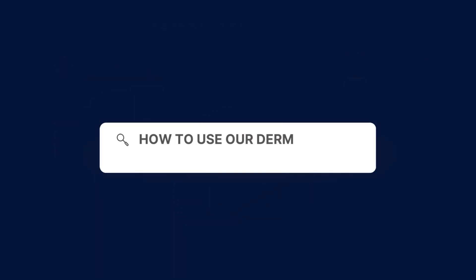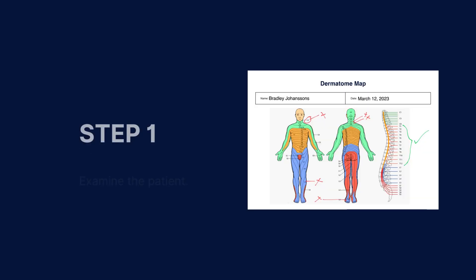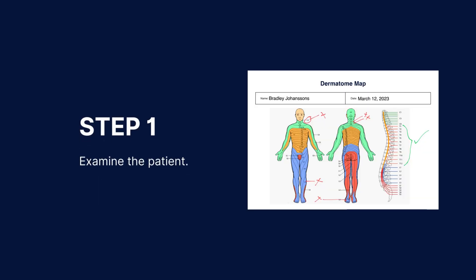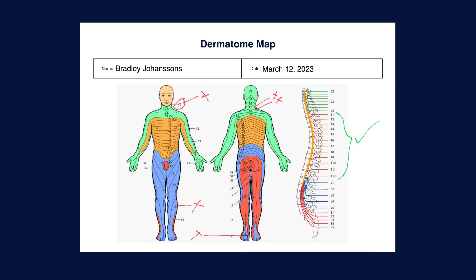To use our dermatome map template, follow these steps. Download our dermatome map template from our Carepatron platform, which you can find in the description. Next, examine the patient. While the patient is being screened for pain or nerve damage, it is essential to keep the template close to identify where the patient may describe a strange or abnormal sensation.